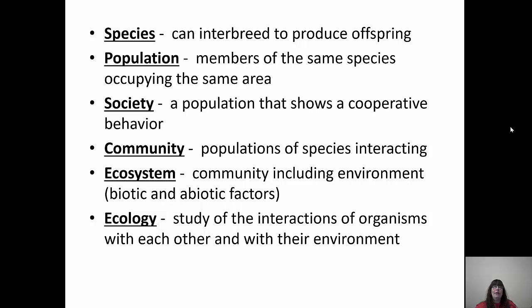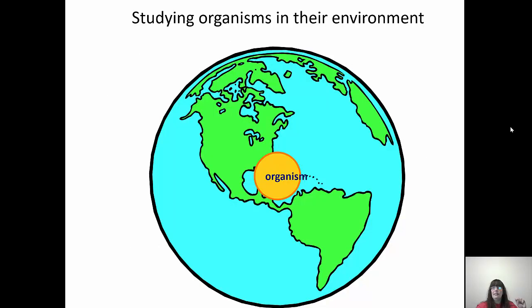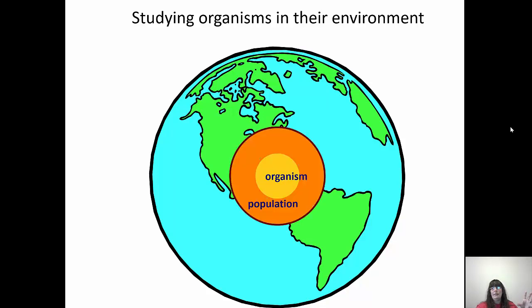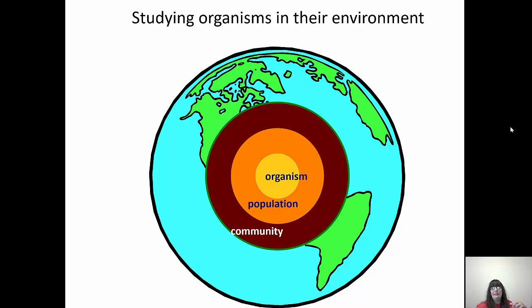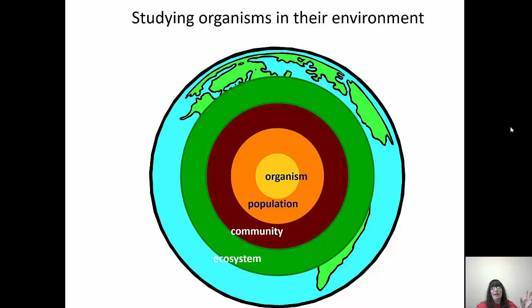A helpful way to think about it: a population would be all of us in a classroom. But as soon as you walk outside, you're in a community because you have grass, squirrels, trees, bugs and other species all interacting. If we were in the classroom doing a group activity, that would be cooperative behavior — technically a society. Organisms form populations, populations form communities, and when you add abiotic non-living factors like precipitation, weather, wind, rocks, and soil, now you have an ecosystem.